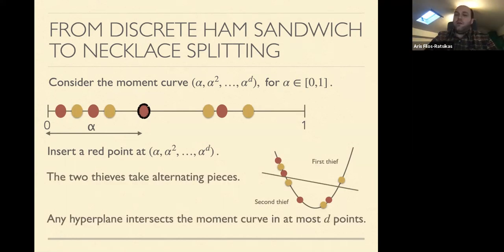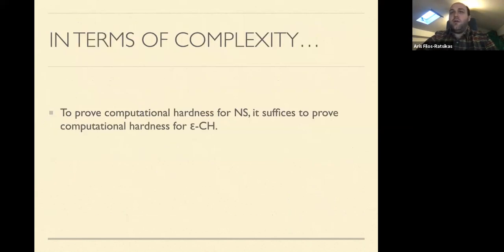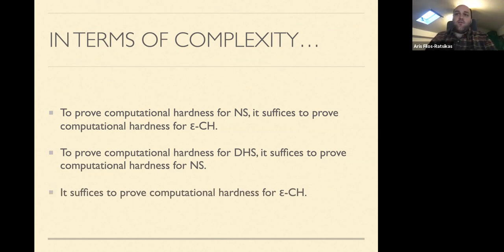We solve the resulting instance using the ham sandwich theorem, finding a separating hyperplane. Everything above the hyperplane goes to one thief, everything below to the other. This works because any hyperplane intersects the moment curve in at most d points, so we never use more than d cuts — giving a solution to necklace splitting. Therefore, to prove computational hardness for discrete ham sandwich, it suffices to prove computational hardness for necklace splitting, and hence it suffices to prove hardness for epsilon consensus halving.